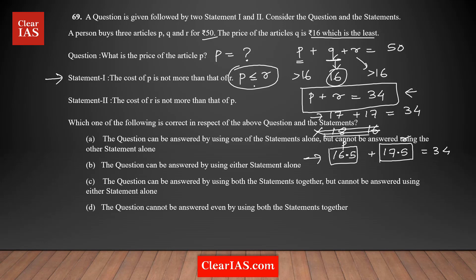Both conditions are satisfied in that decimal example. So, using statement 1, you are getting multiple values for P — 17 in the first case, 16.5 in the second, and even 16.4 or other decimals are possible. There are multiple values possible. Therefore, statement 1 is not sufficient to answer the question. Statement 1 is eliminated, and option B is also eliminated because statement 1 alone cannot answer the question.